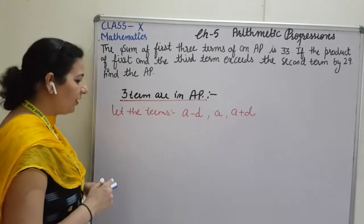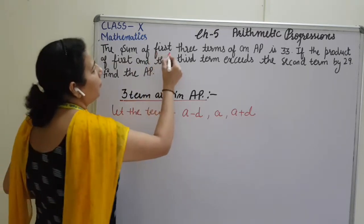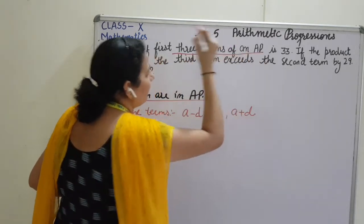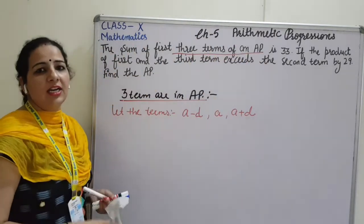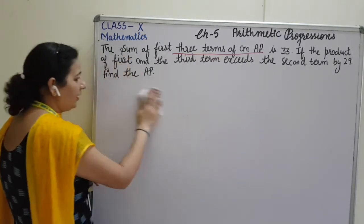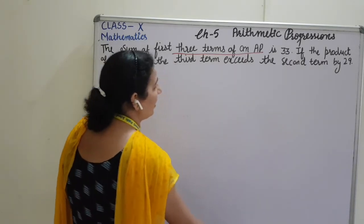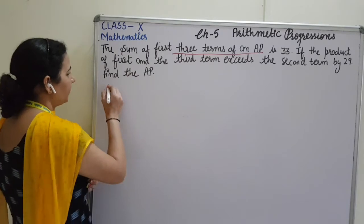Clear students? So here, they have given that sum of the first 3 terms. 3 terms are in AP. These are the magical words. That how we can find out that we have to start the question by letting that A minus D, A and A plus D.